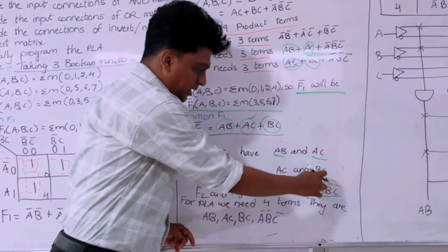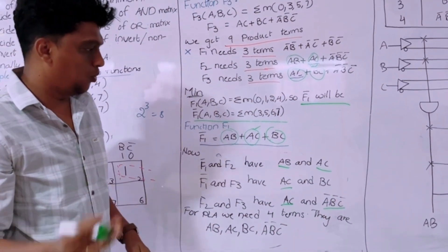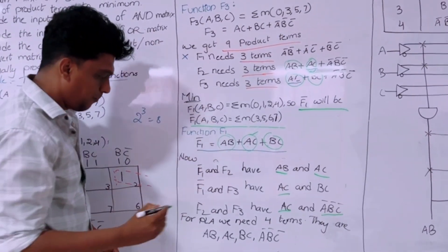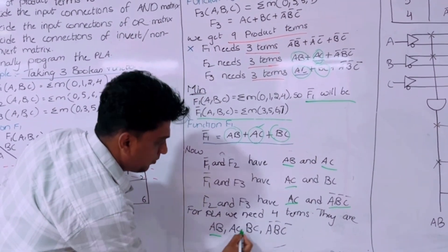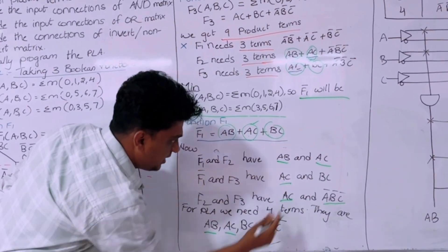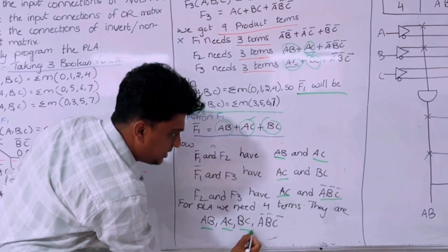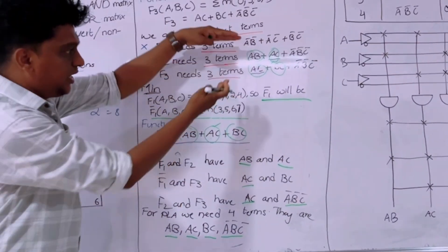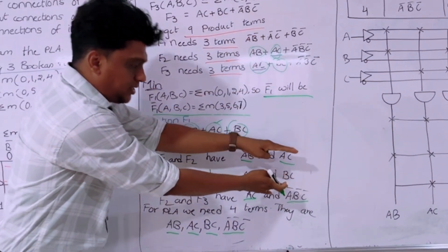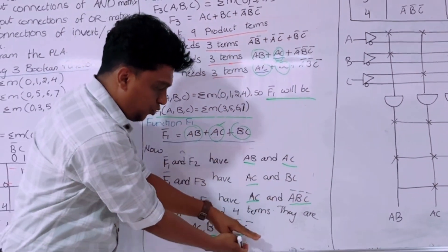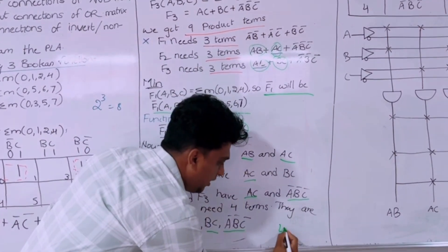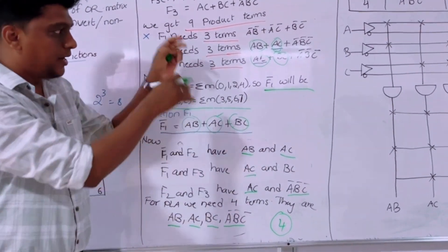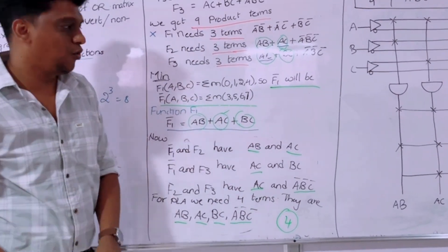Among these terms, if there are repeated terms we write them only once. So we are left with: AB, AC, BC, and A-bar B-bar C-bar. Initially we reduced from 9 to 6, and then from 6 to 4. Finally we have only 4 product terms. We have to reduce 9 to 6 and then 6 to 4, and at this step we stop.